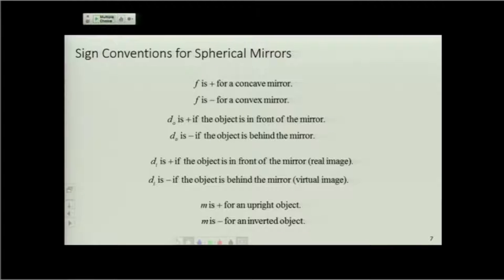So positive focal length for a concave mirror, negative focal length for a convex mirror, positive object distance if the object is in front of the mirror, negative object distance if the object is behind the mirror. And at this point,